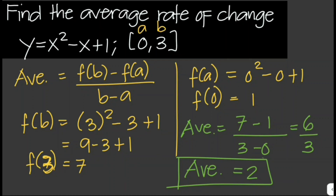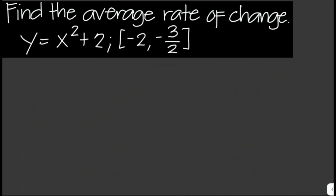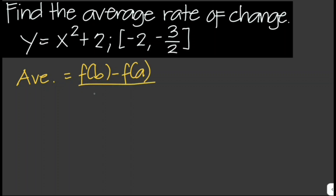Let's solve another problem. Find the average rate of change of the given function y equals x squared plus 2 at interval negative 2, negative 3 halves. So we use f of b minus f of a over b minus a. These are our a and b values. Let's solve for f of b, where b is equal to negative 3 halves.